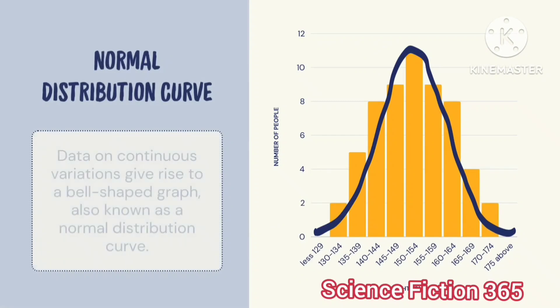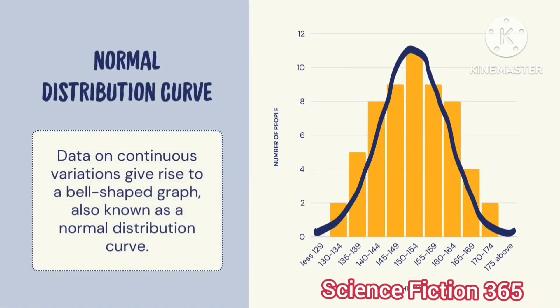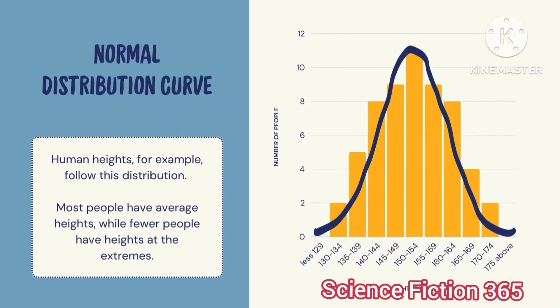Data on continuous variation gives a bell-shaped graph, also known as a normal distribution curve. Humans follow normal distribution — for example, most people have average height, while fewer people have heights at the extremes.